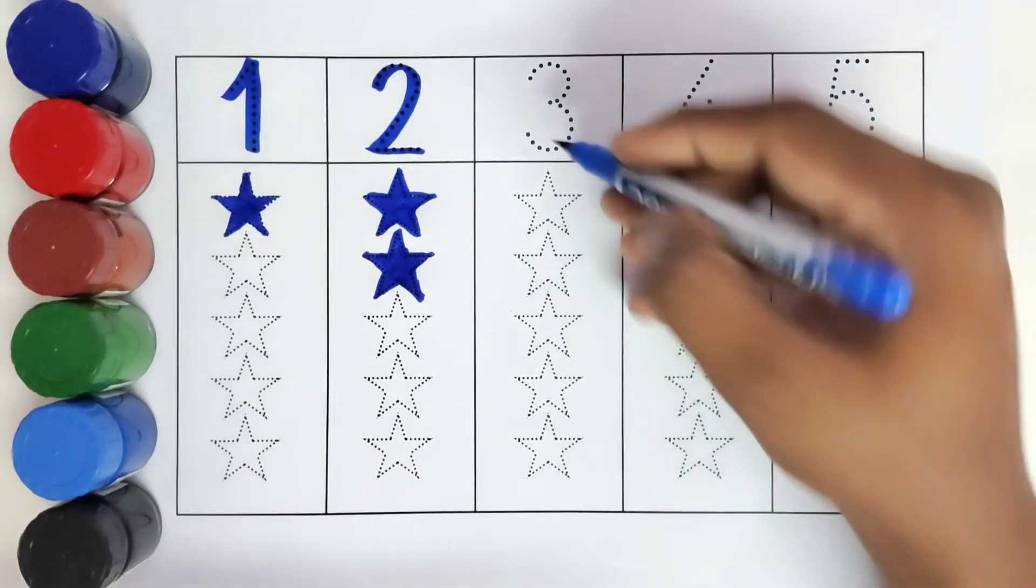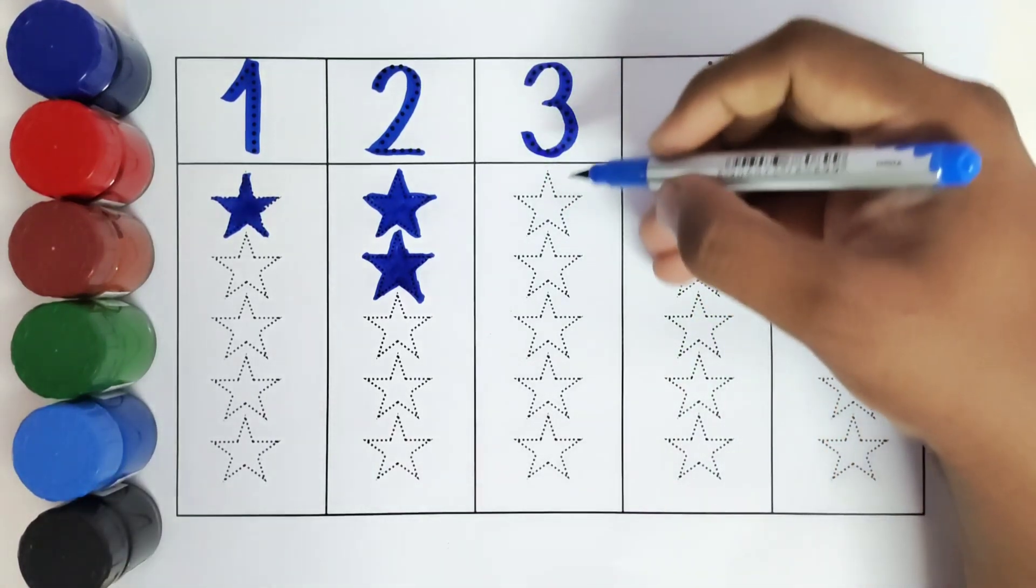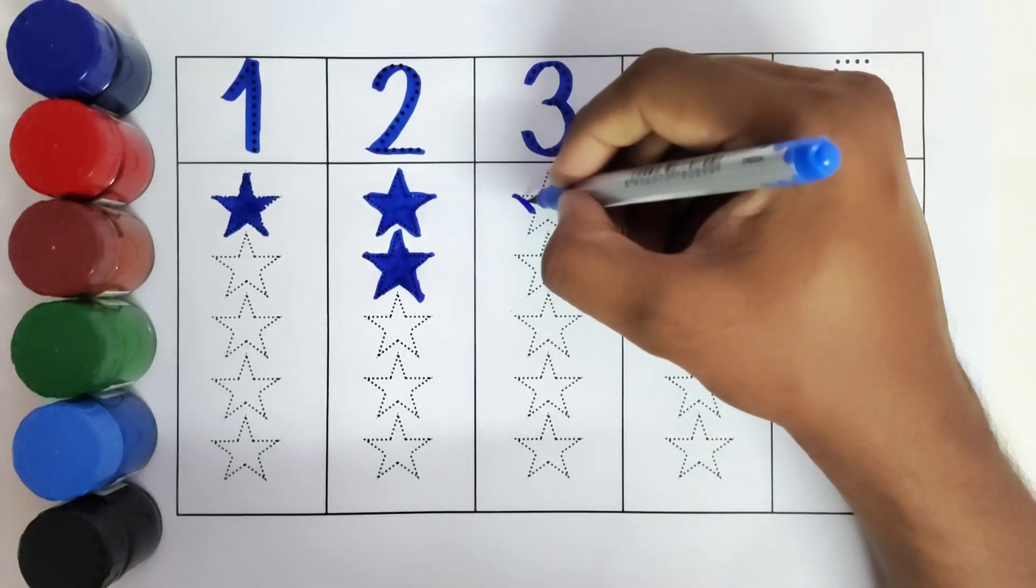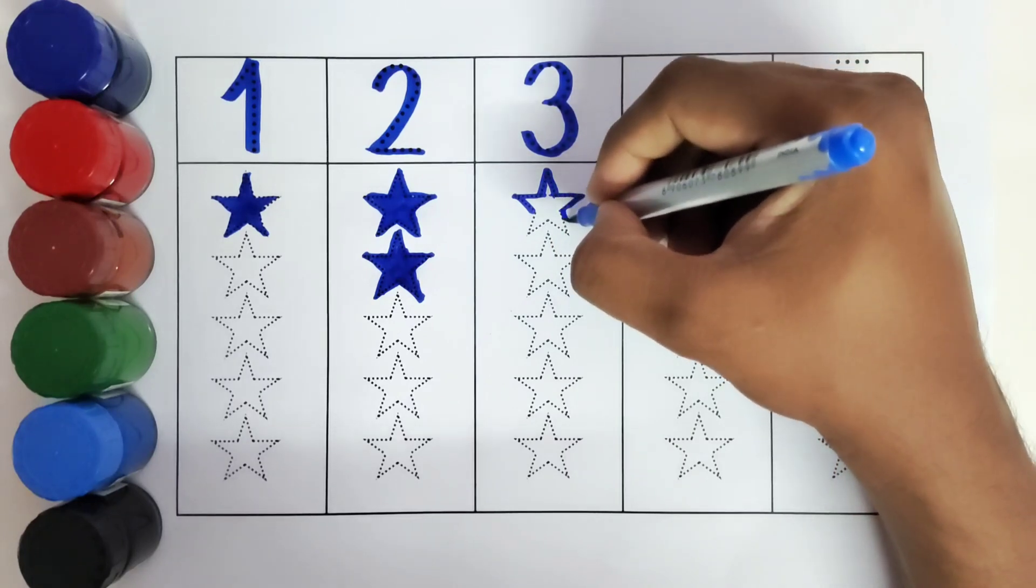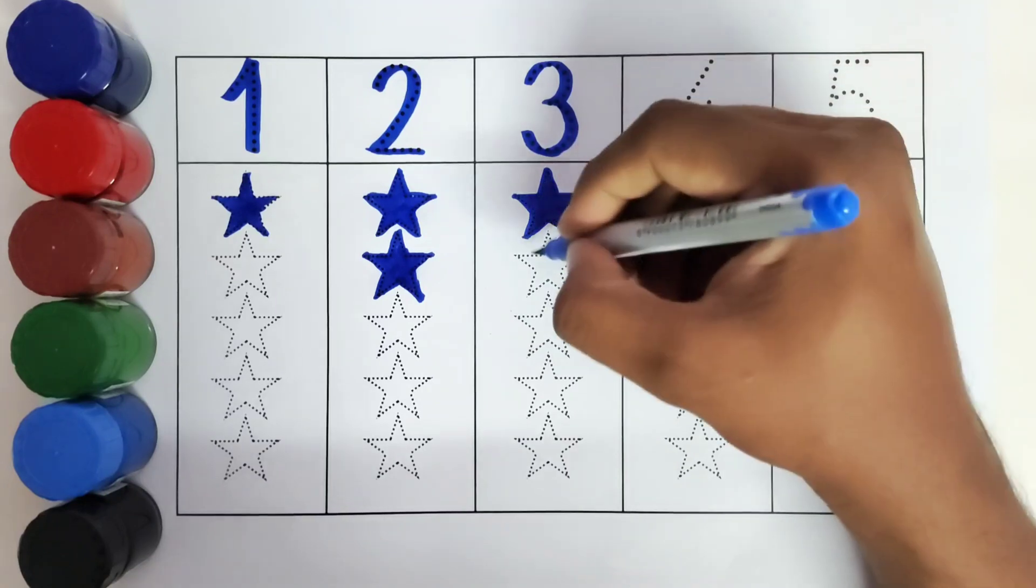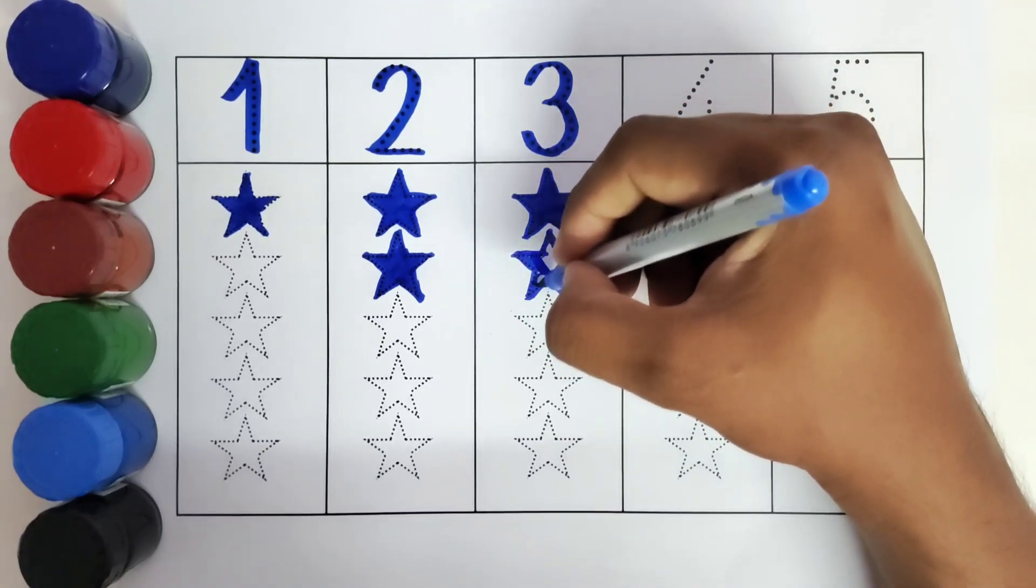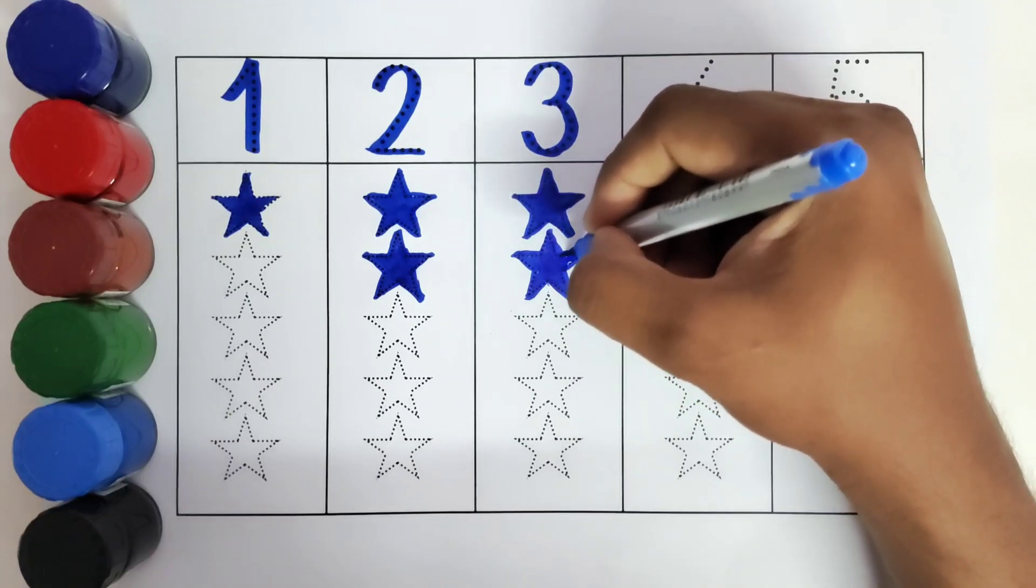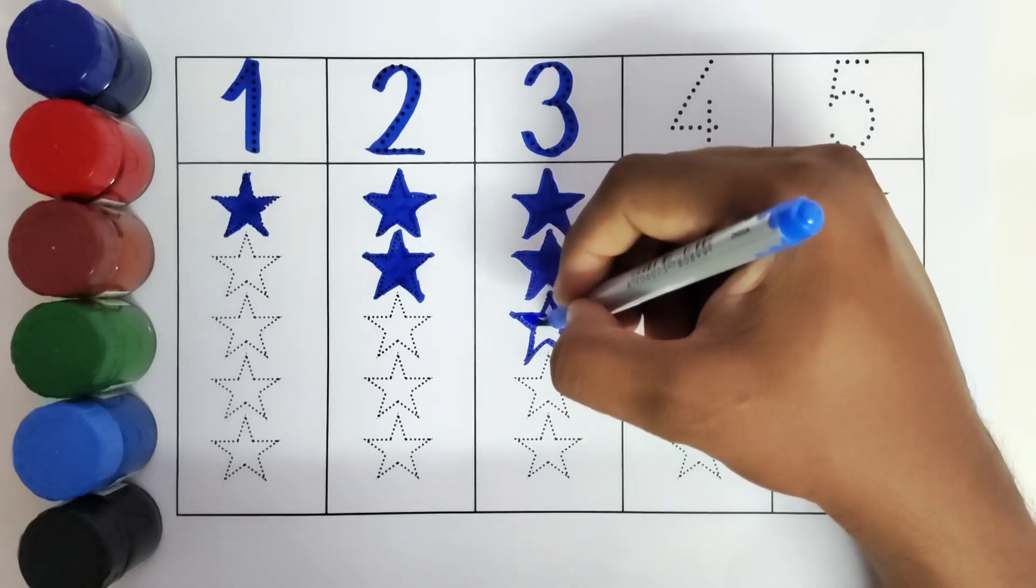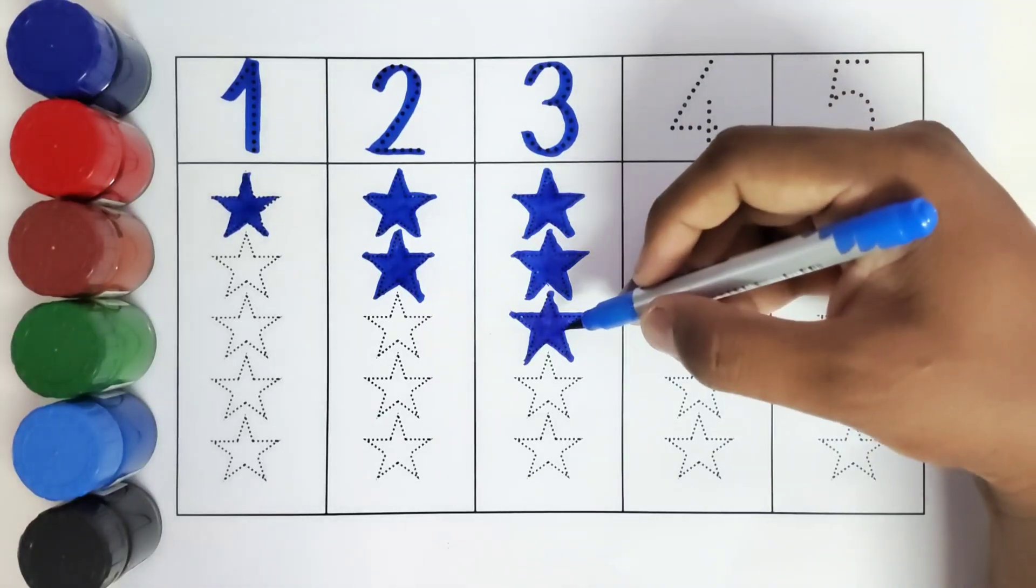This is 3. Number 3. How many stars do we have to color? 1, 2, 3. We have colored 3 stars.